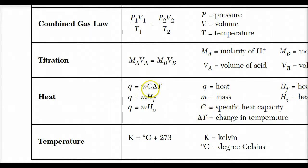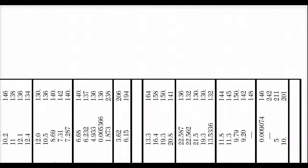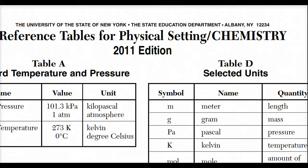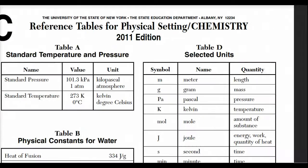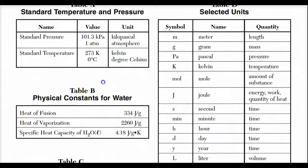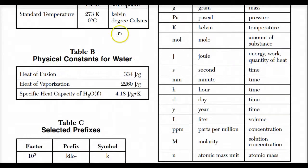The specific heat — which is the ability for the substance to change its temperature, how well it conducts energy — is located in Table B. If we go up to Table B in our reference table, we can see the constants for water.